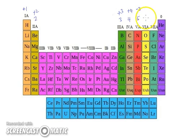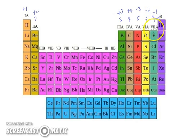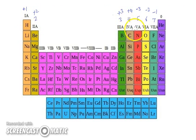In a similar way, elements present in the sixth group have six valence electrons and they need two more electrons to complete their octet, so they show a minus two charge. Finally, seventh group elements have seven valence electrons and they need only one more electron to complete their octet, so they show a minus one charge. In summary, elements from Group 1A to 4A show positive charge, and from Group 5A to 7A show negative charge.